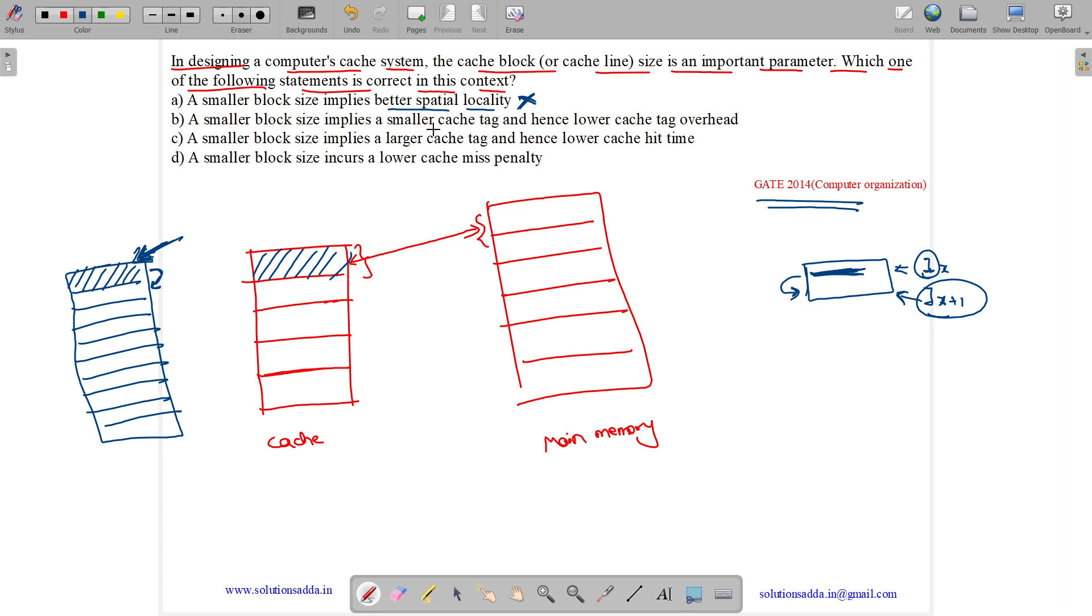A smaller block size implies a smaller cache tag and lower cache tag overhead. Let us see. Our address has three parts: it has tag, it has index bits, and it has offset.